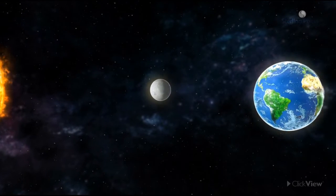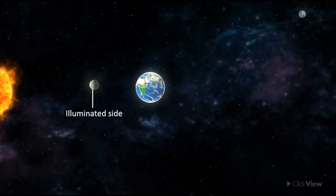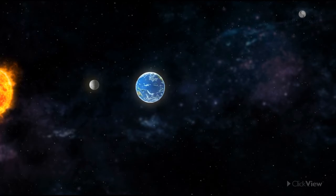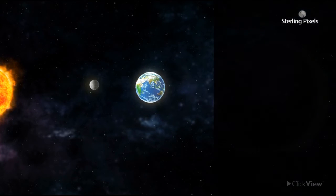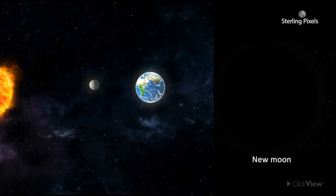When the moon is between the Sun and the Earth, its illuminated side faces away from the Earth, and the side facing the Earth is dark. At this position, we do not see the moon in the sky at all, and it is called the new moon, or no moon.